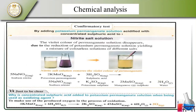We add potassium permanganate solution. With the acid, the permanganate solution decolorizes. Sodium nitrite with potassium permanganate and sulfuric acid gives sodium nitrate, potassium sulfate, manganese sulfate, and water.